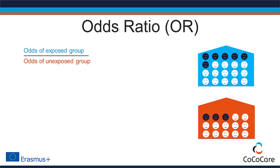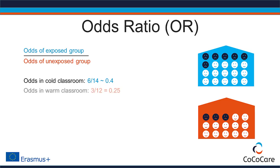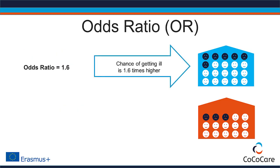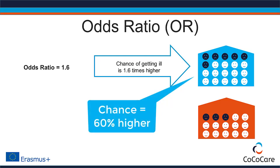For our example, we calculate the ratio between the odds of getting ill in the cold classroom and the odds in the warm classroom. In the cold classroom, the odds of getting a cold are 6 to 14, or 6 divided by 14 — that's around 0.4. In the warm classroom, the odds of getting a cold are 3 to 12, or 3 divided by 12 — that's 0.25. The odds ratio is obtained by dividing 0.4 by 0.25, which gives 1.6. So the chance of getting ill in the cold classroom is 1.6 times the chance of getting ill in the heated classroom, or the chance is 60% higher.